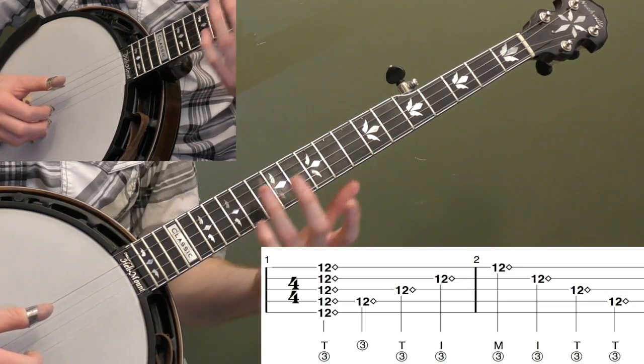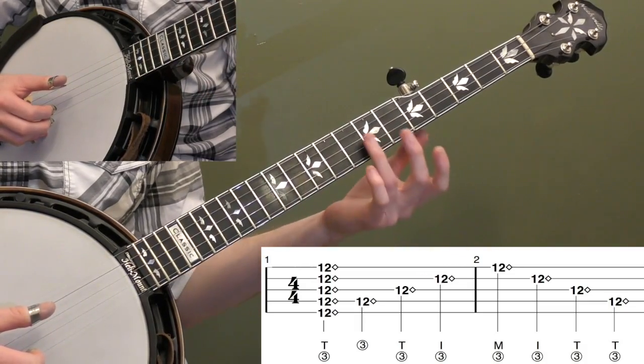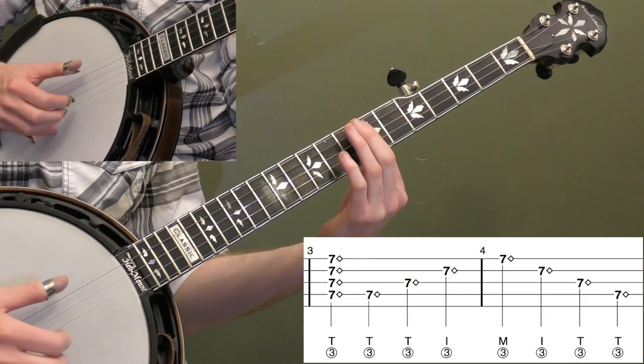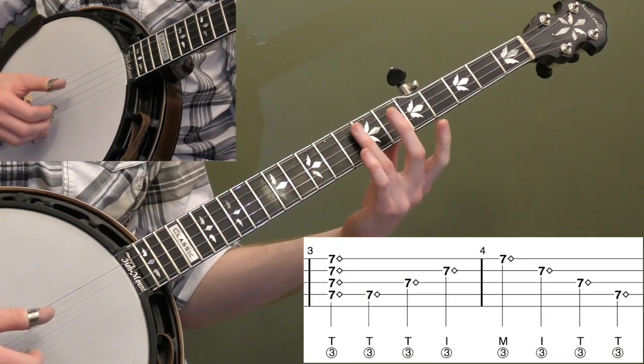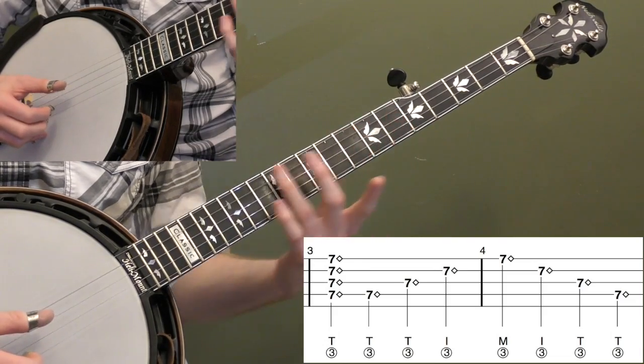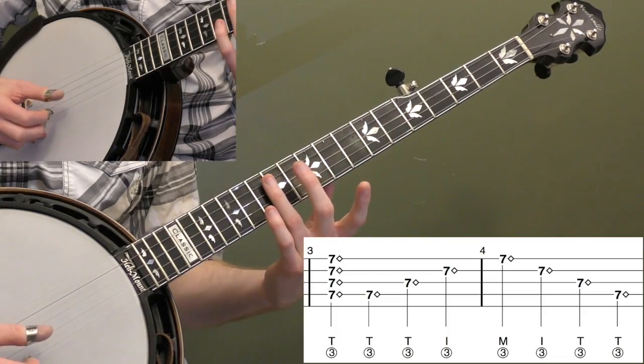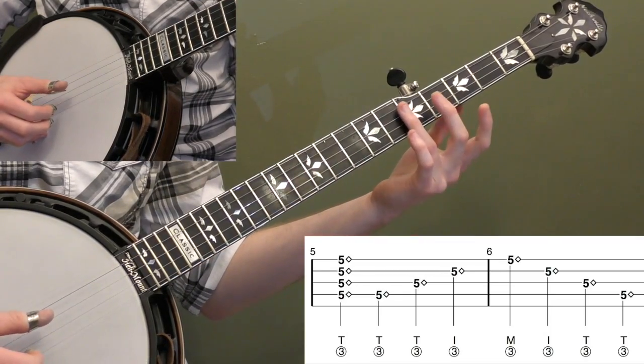So the other spot you can do it, there's a bunch of spots you can do it on the neck, but you can do it at the seventh fret. That's like a D chord. It's basically your D bar, your D bar chord. That's a nice one. You can also do it at the fifth fret.